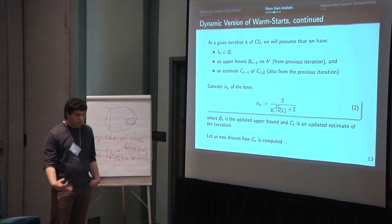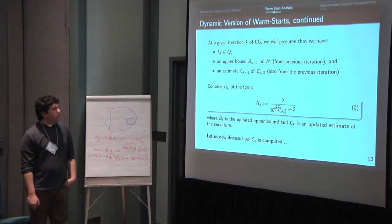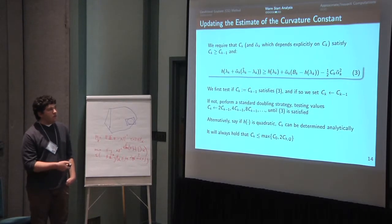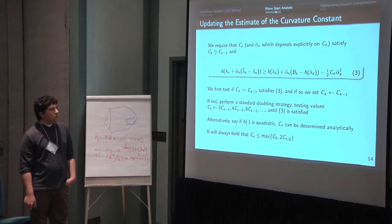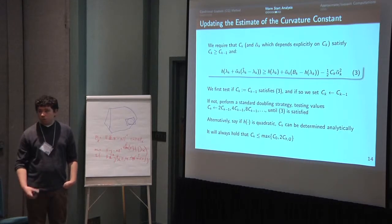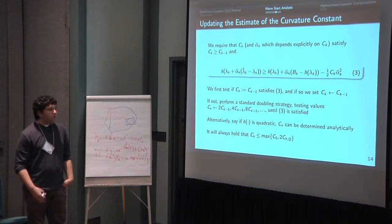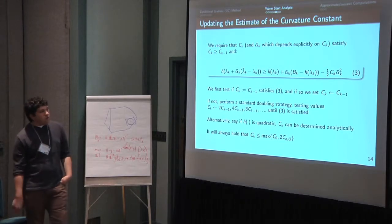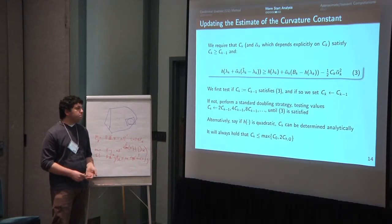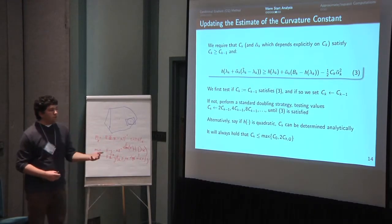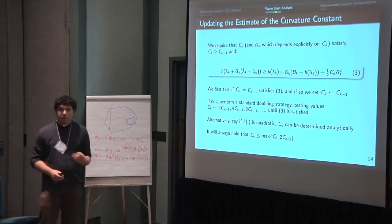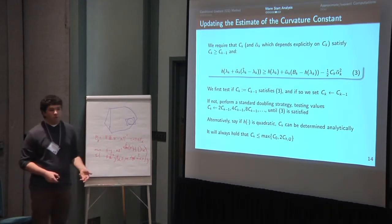So let's now discuss how we compute this curvature constant. So what we need is that it satisfies this inequality, basically, which is the definition of the curvature constant. So what we do is we first test the previous estimate. If that works, we're good to go. Otherwise, we can do some kind of doubling strategy or if we have a quadratic function, you can determine it analytically, but of course, if you have quadratic, you can just do a line search anyways. And of course, it'll always hold with the doubling strategy that our estimate is less than the max of the initial estimate and twice times the true curvature constant.